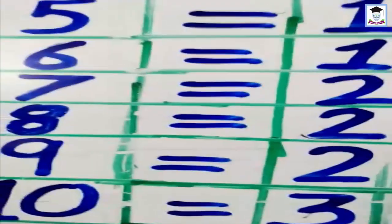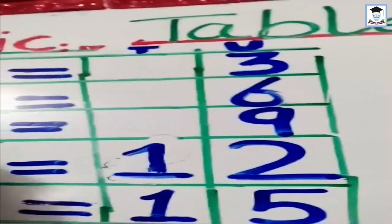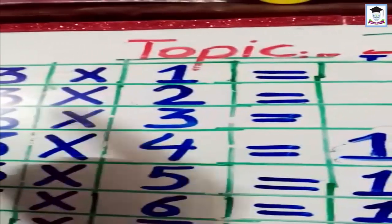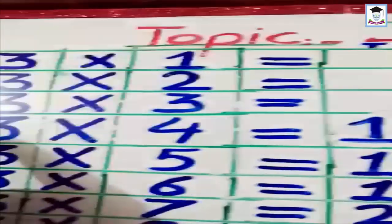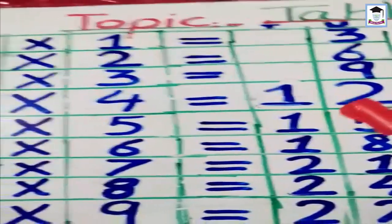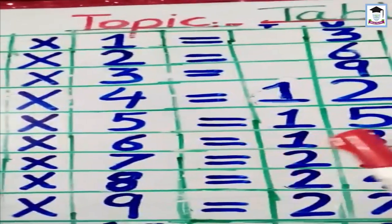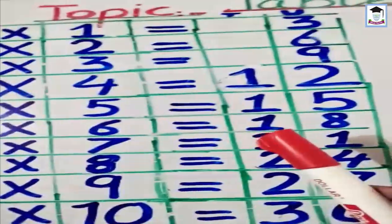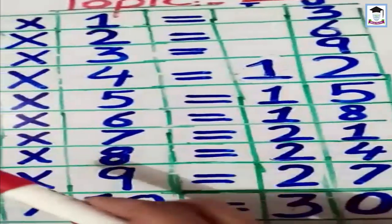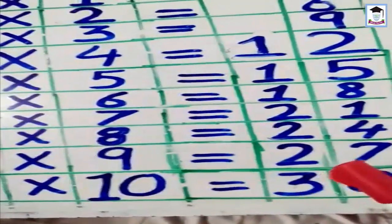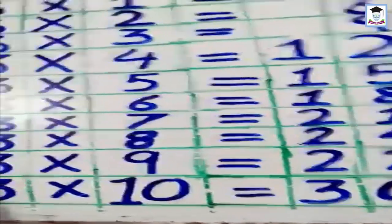Then we multiply with 3, like 3×1=3, 3×2=6, 3×3=9, 3×4=12, 3×5=15, 3×6=18, 3×7=21, 3×8=24, 3×9=27, 3×10=30.